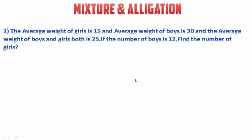The average weight of girls is 15 and the average weight of boys is 30, and the average weight of boys and girls both is 25. If the number of boys is 12, find the number of girls.